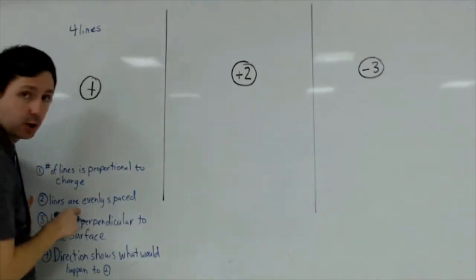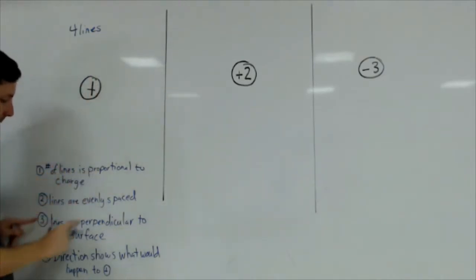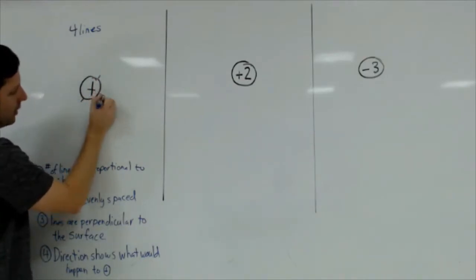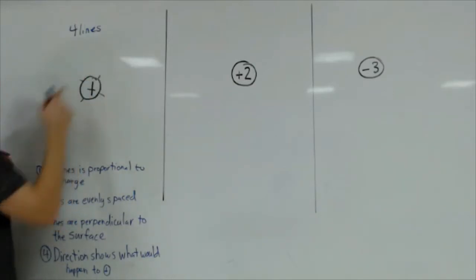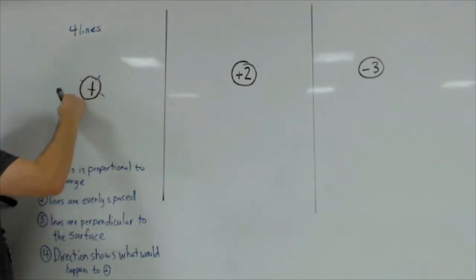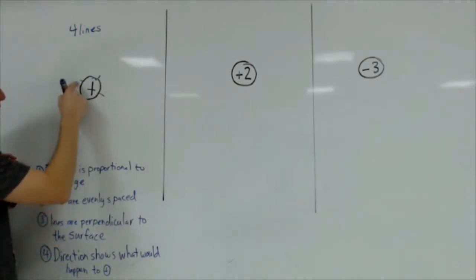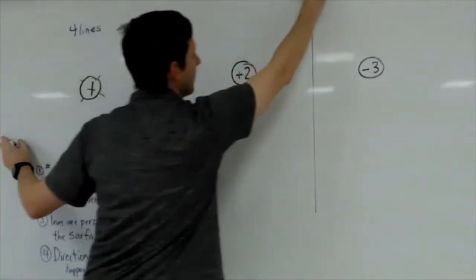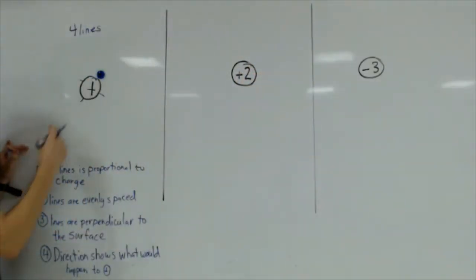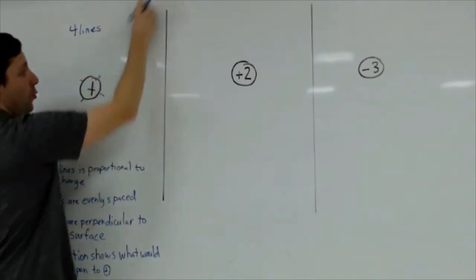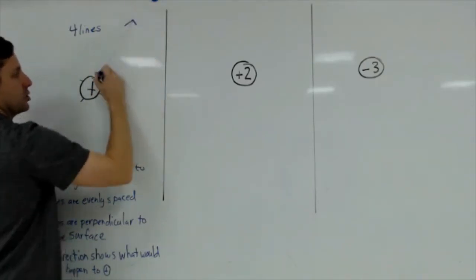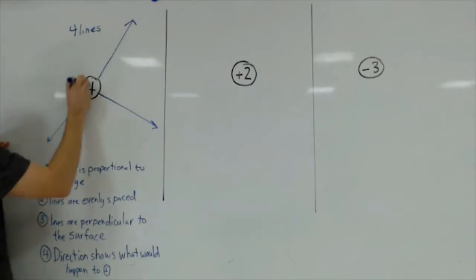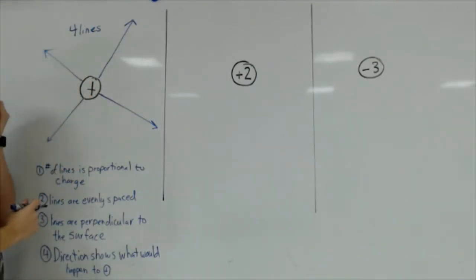I need to make sure the four lines are evenly spaced around the charge and perpendicular to the surface — one here, one on the other side, one here, and one there. Then for direction: if I place a positive charge near this positive one, like charges repel, so it would go straight out. That same thing happens in each direction — the arrows all point outward.